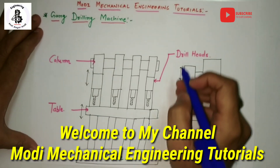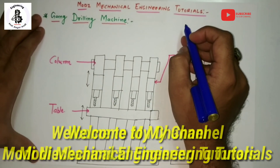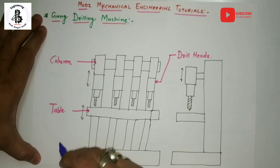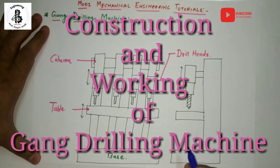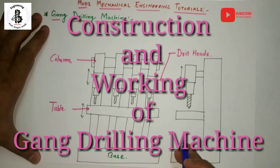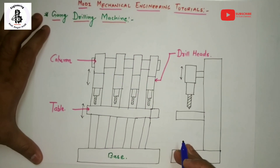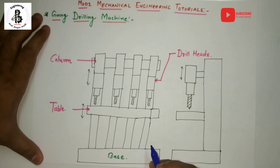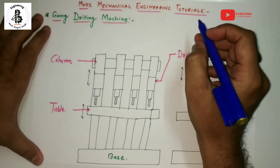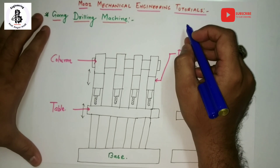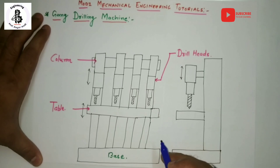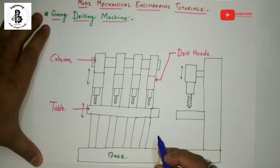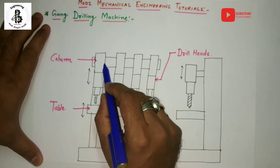Welcome to my YouTube channel Modi Mechanical Engineering Tutorials. Today I am explaining about gang drilling machines. Starting with the construction of the gang drilling machines — as we discussed about the basic drilling machines, those are the sensitive drilling machines, radial drilling machines, and upright drilling machines. But in the case of gang drilling machines, more than one spindle is attached onto the horizontal column.